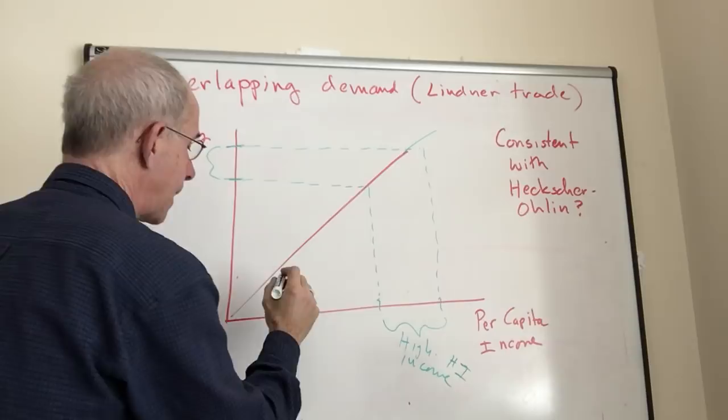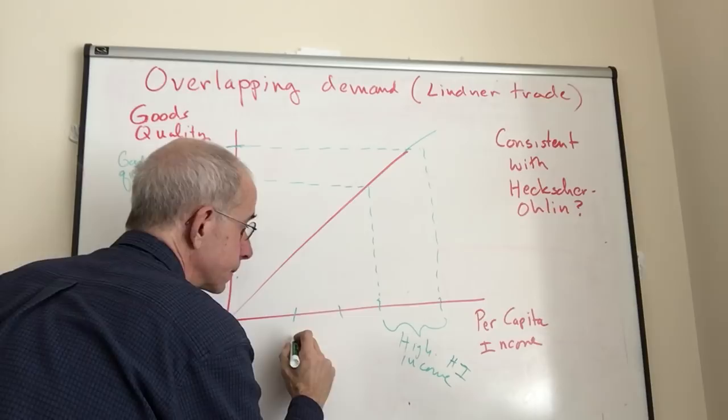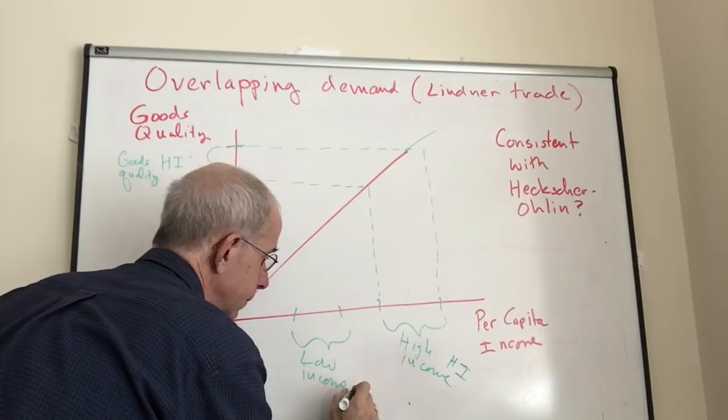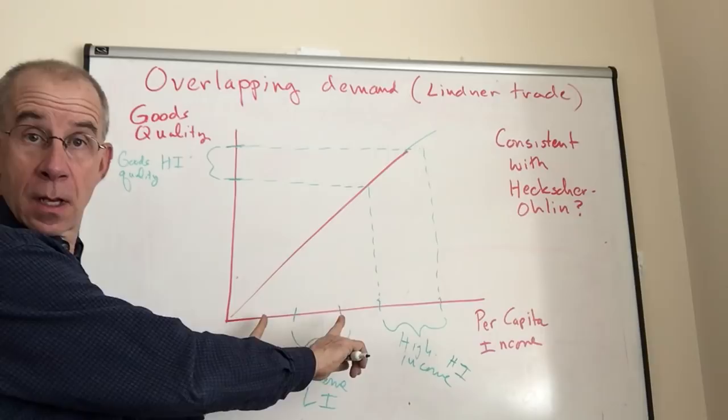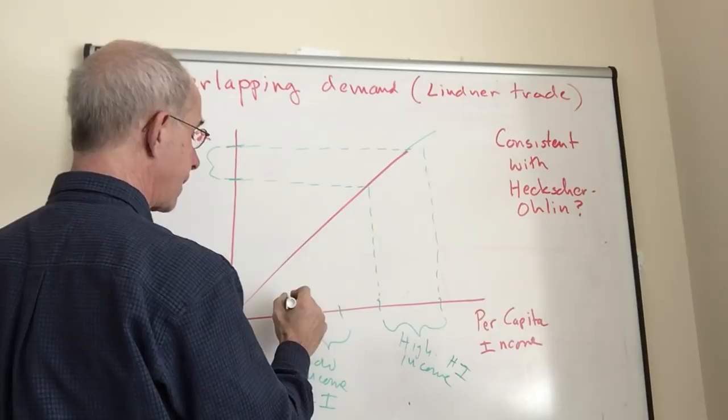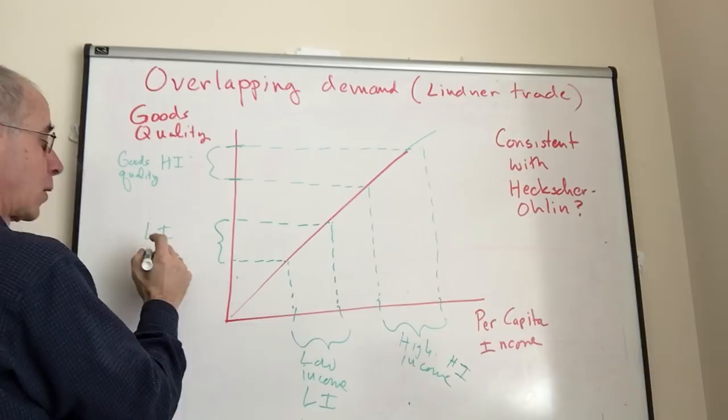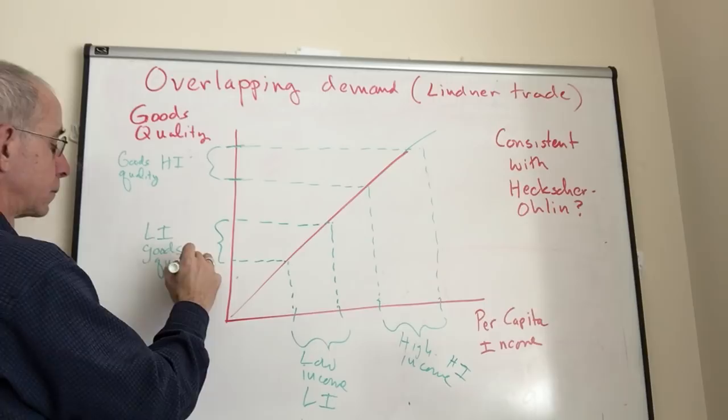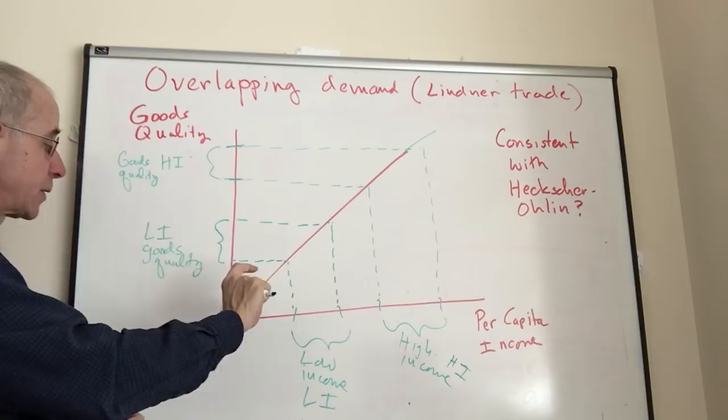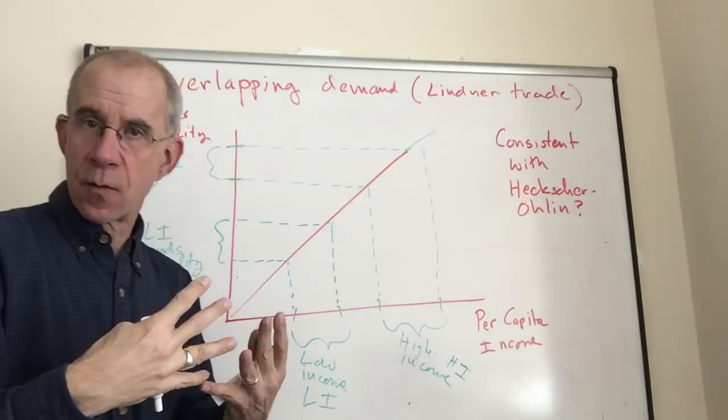Let's imagine a low income country which has a per capita income much lower than the rich country, and they will consequently produce a different set of quality. The thing that you immediately notice here is that the goods that are produced in the low income country and the high income country do not overlap.